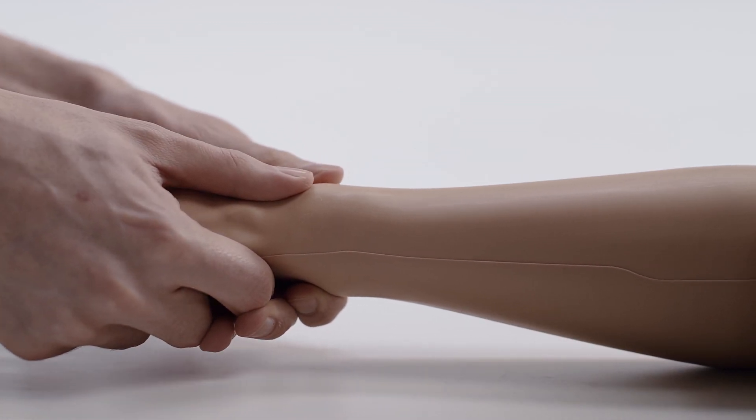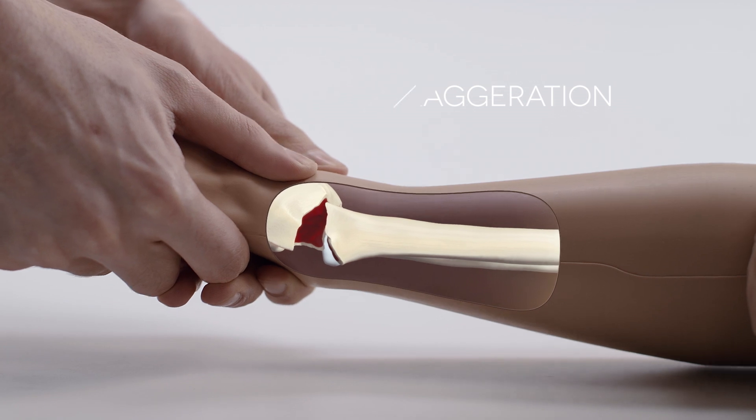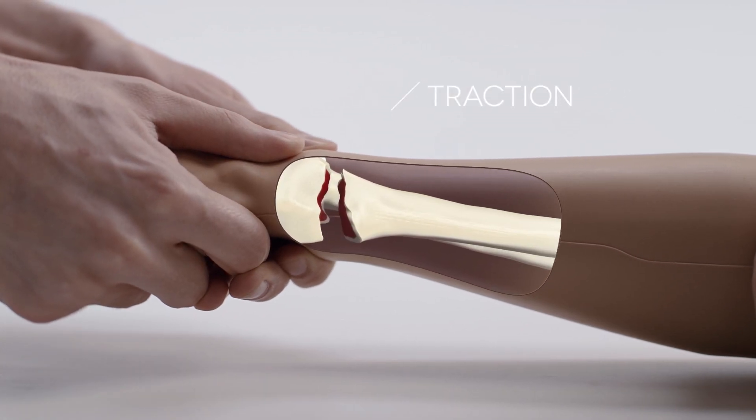Training in teams, trainees can perform all three stages of reduction: exaggeration, traction, and flexion.